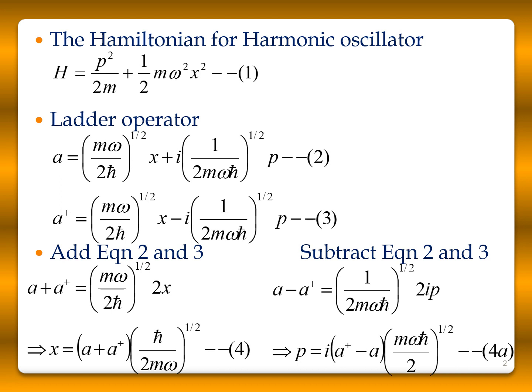Adding these two equations, you can get x equal to (a + a†)(ℏ / 2m omega)^(1/2). Subtracting these two equations, you can get p equal to i(a† - a)(m omega ℏ / 2)^(1/2).